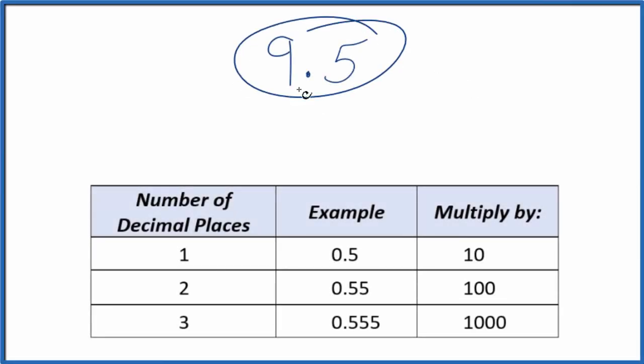If you need to write the number 9.5 as a fraction, here's how you could do that. First, let's just call this 9.5 over 1. It's still 9.5, we're just dividing by 1. Now we have a fraction, the start of a fraction.